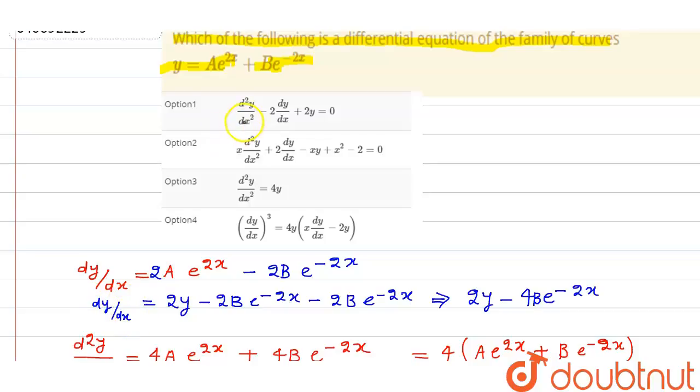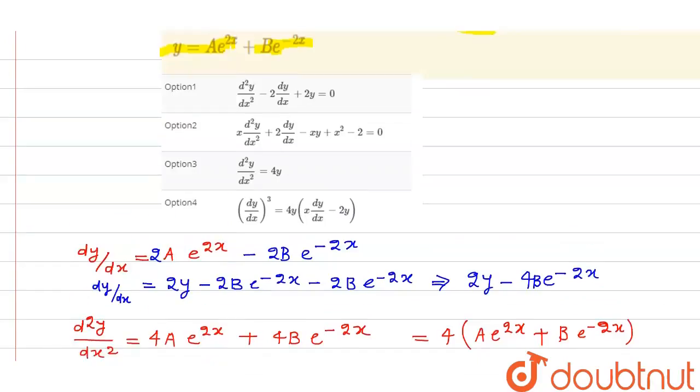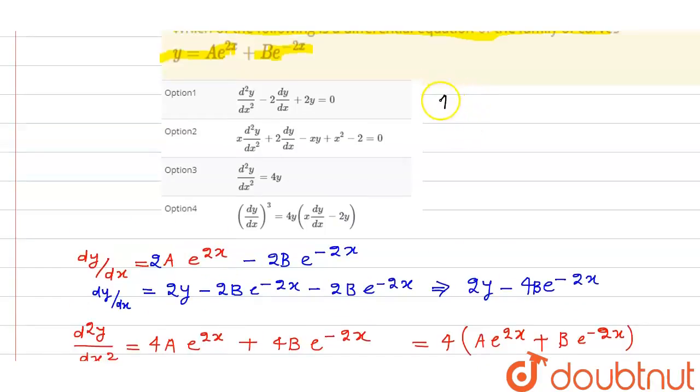Now see, we need to substitute all these values. d²y upon dx square, which is 4y. So let us say this is 4y. This 4y is equal to...